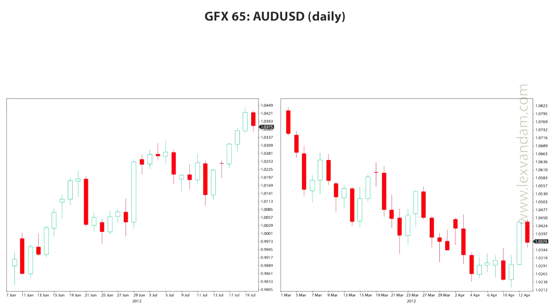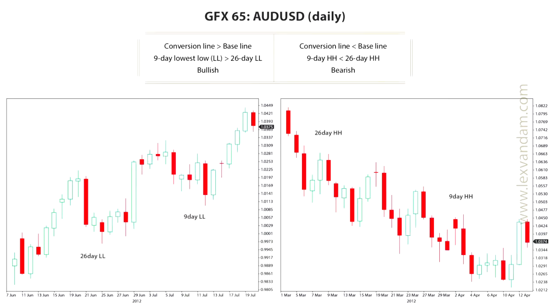The baseline uses 26 days of data and is slower to change, as it has a longer memory than the conversion line. In concept they don't differ much from a moving average, and when they cross this could be a good trading signal. When the conversion line is above the baseline, it is considered bullish. When the conversion line is below the baseline, it indicates that the highest high of the previous 9 days is below the highest high of the previous 26 days, which is considered bearish. The workbook will walk you through an example.